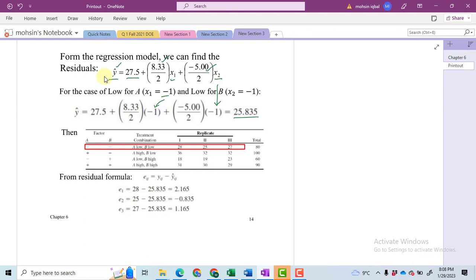So now using this predicted value we will compute our residuals. Now we want to know what's the formula for computing the residuals. So the formula for the residual is yij, this is the original value or you can say experimental value, minus yij hat. This is the predicted value.